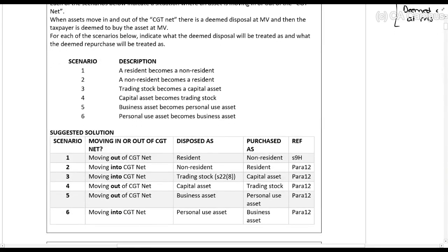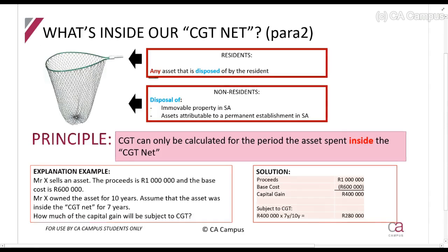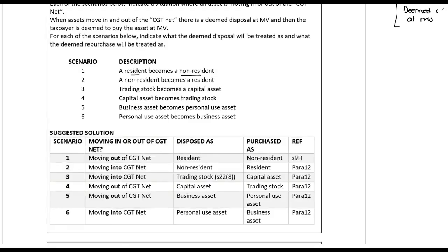Scenario A: a resident becomes a non-resident. What is in the CGT net for a resident? Any asset. For a non-resident? Only immovable property in South Africa and assets attributable to a permanent establishment. So if you are a resident and you become a non-resident, some of your assets are going to be moving out of the net — all assets except those two. For example, shares in a listed company are included in the CGT net for a resident, but not for a non-resident. So when a resident becomes a non-resident, those shares move out of the net. Reference: section 9H.